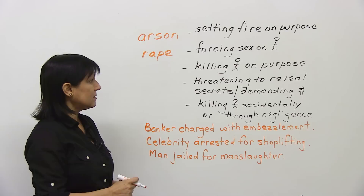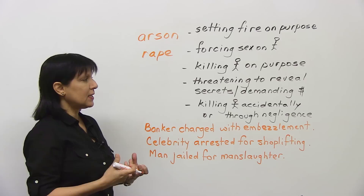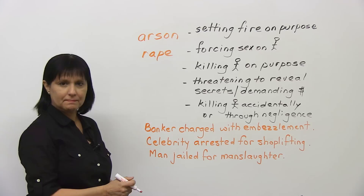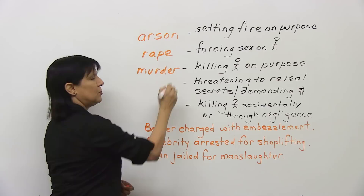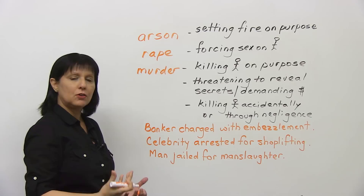What's the word for the act of killing someone on purpose, with a plan? It starts with M. Most people are unfortunately familiar with this word, which is murder. The person is called a murderer — you add another ER at the end.